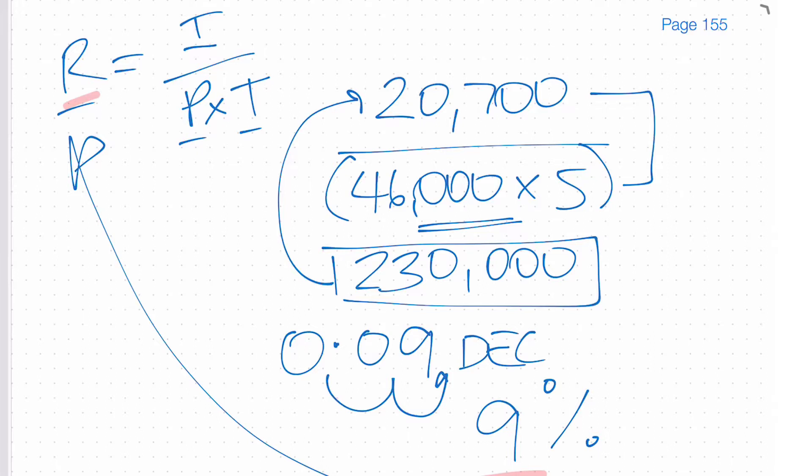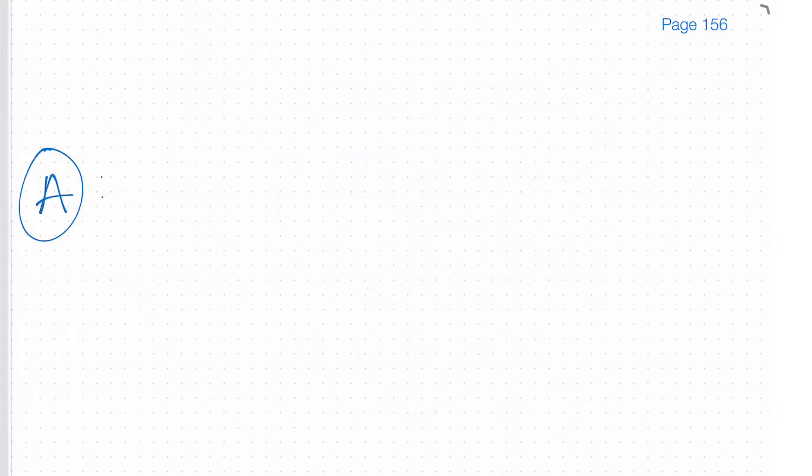Now in the answer section or the explanation next to each of the questions that you got in your practice exam will be the raw formula to show you the formula or the calculation that you should have done to get to the correct answer. And so that raw formula would be displayed like this, 46,000 multiplied by the term or the time, either or.